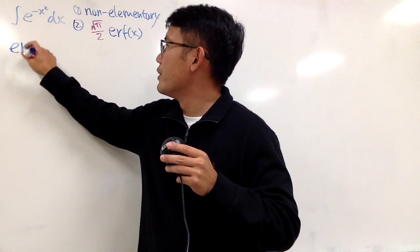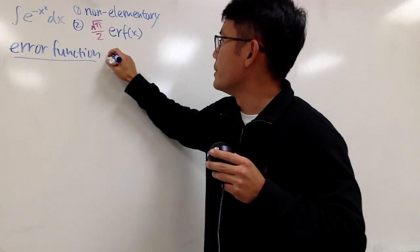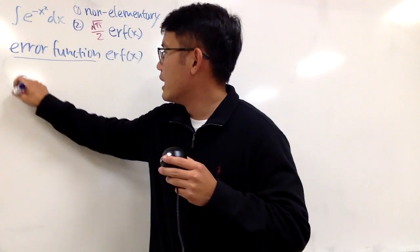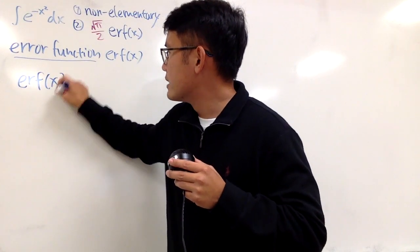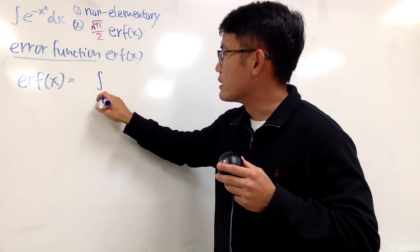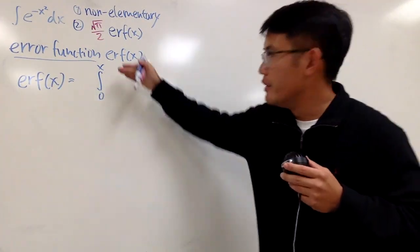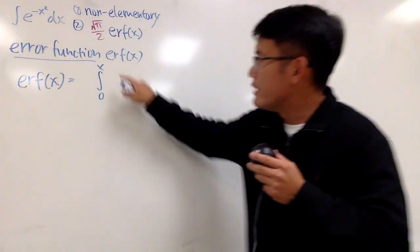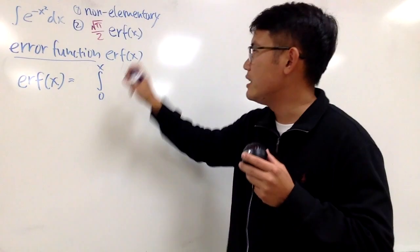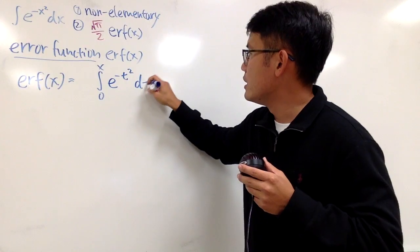This is called the error function, and I'll just call this the erf of x. The official definition is that erf of x is defined to be an integral. I have the integral from 0 to x — because the input here is x, I want this to be x as well, but if I use x inside the integrand, I can't also use x as the variable. So just change the variable to t: e to the negative t squared, and then put dt.